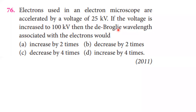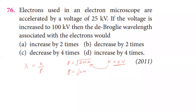The de Broglie wavelength is given by h divided by momentum, where momentum is equal to the square root of 2m times kinetic energy. Since kinetic energy equals charge times potential difference, the momentum becomes the square root of 2m times e times V. Therefore, the de Broglie wavelength equals h divided by the square root of 2m times e times V.